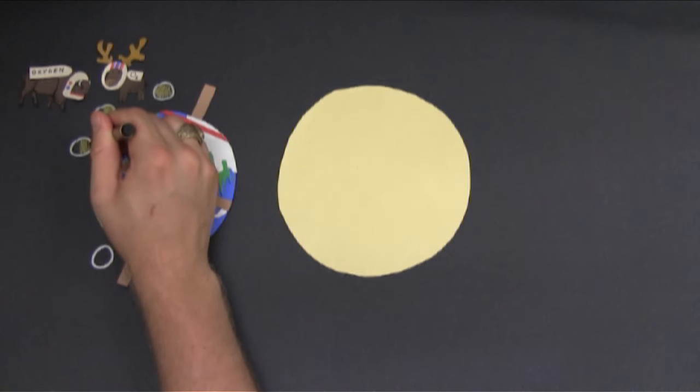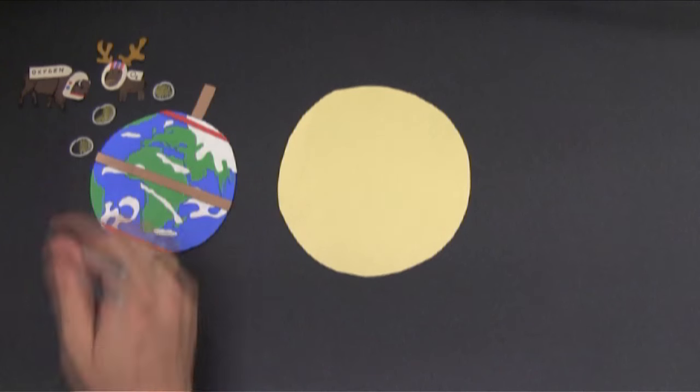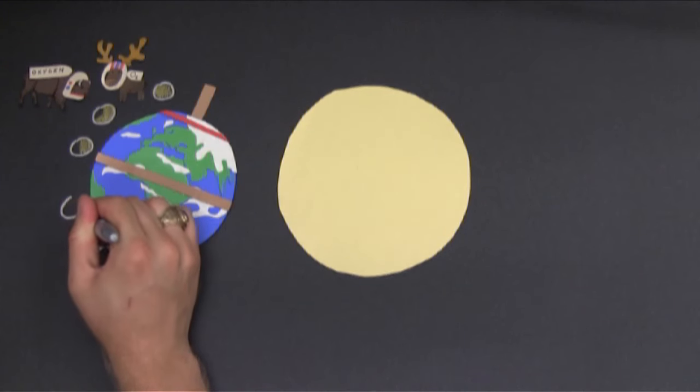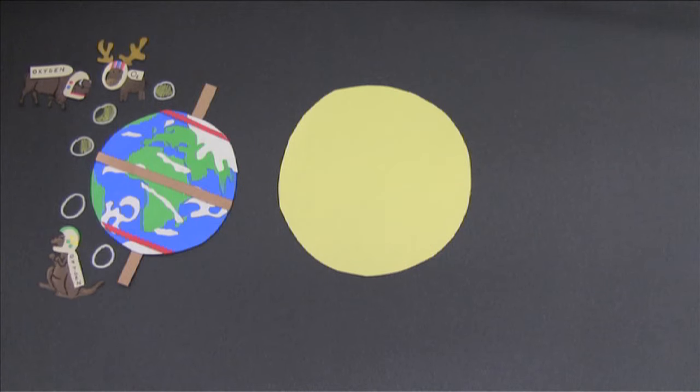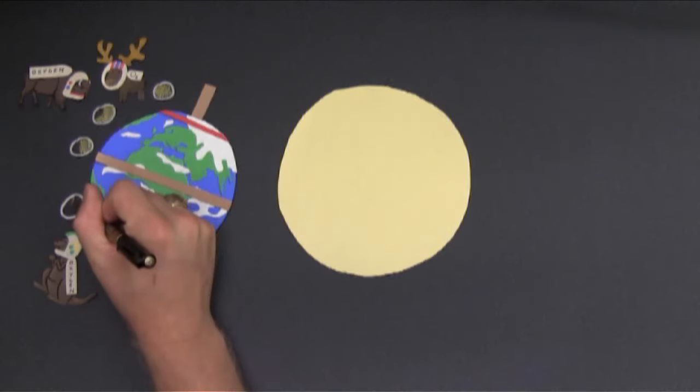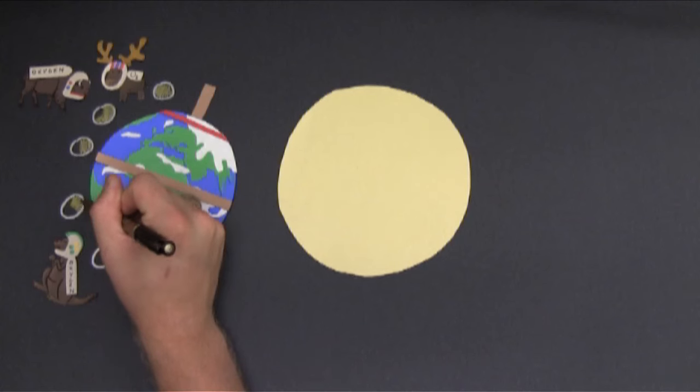If we go even further south to Australia, between the equator and the Antarctic Circle, how many hours of daylight will we have? Less than 12. Exactly! This is the shortest day of the year in the Southern Hemisphere.